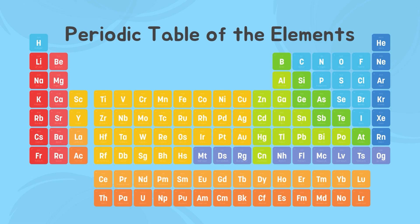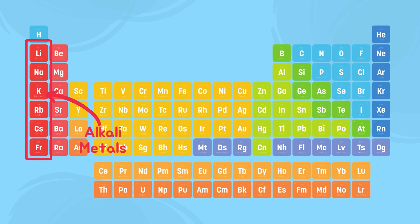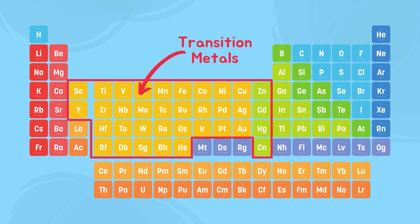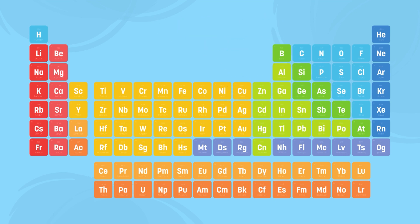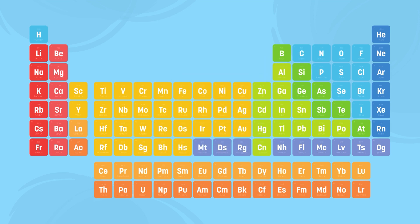Each element has an atomic number which represents the number of protons that the element has. There are different groups of elements, such as noble gases, alkaline metals, alkaline earth metals, transitional metals, post-transitional metals, metalloids, halogens, lanthanides, and actinides. Each element has an abbreviation using letters, such as nitrogen being represented by the letter N. A periodic table is used by many people even today to determine what type of group each element belongs to and to predict its properties.